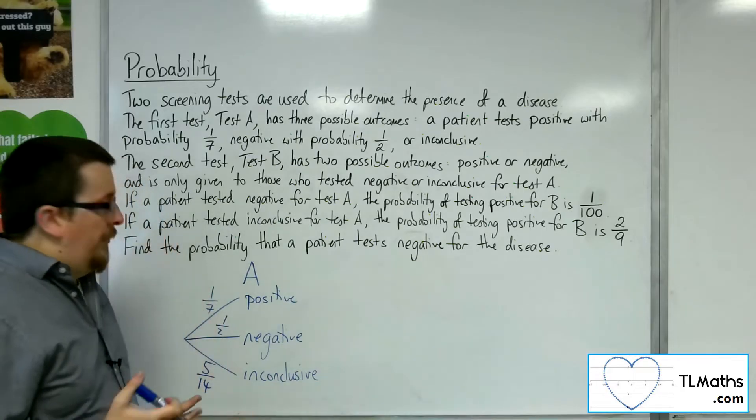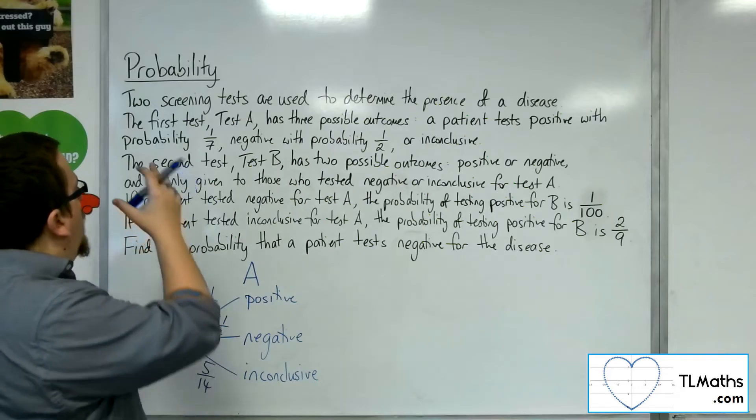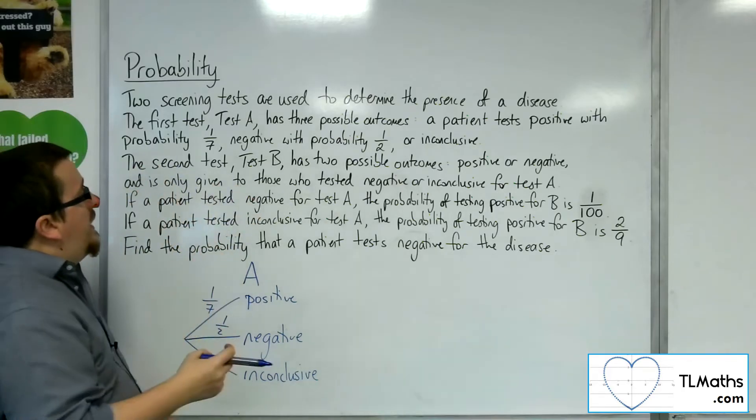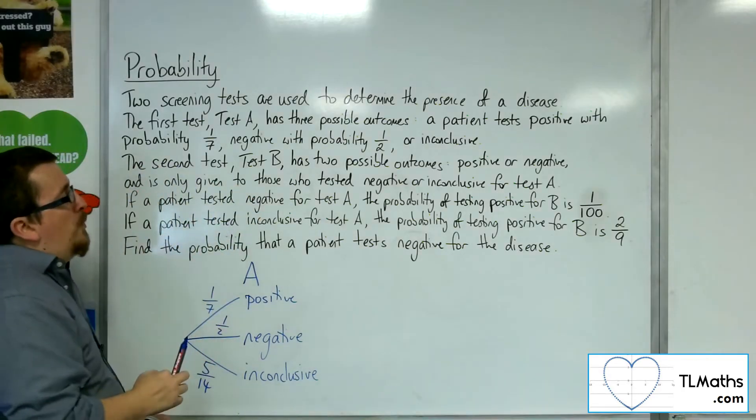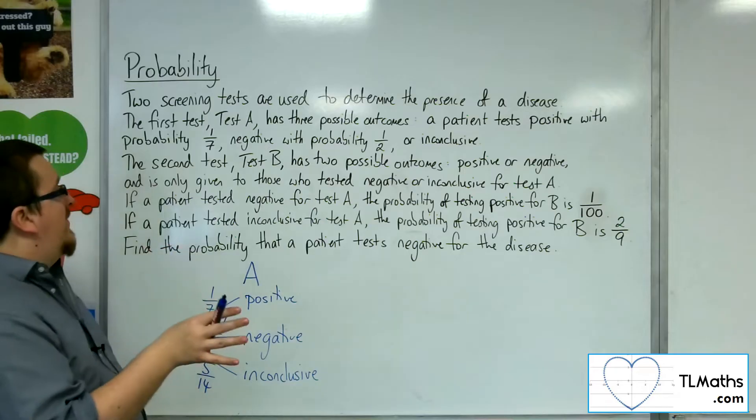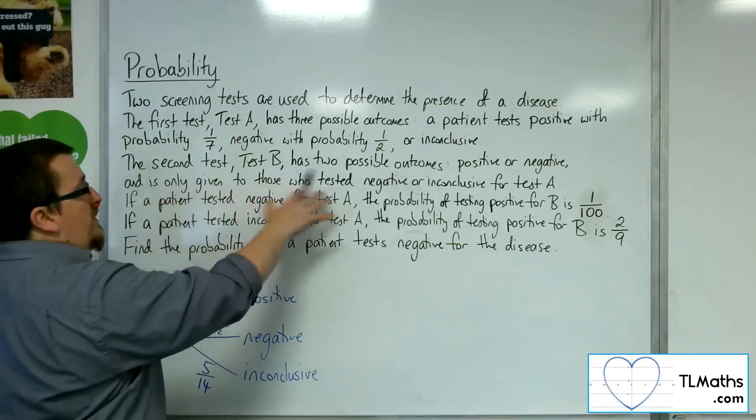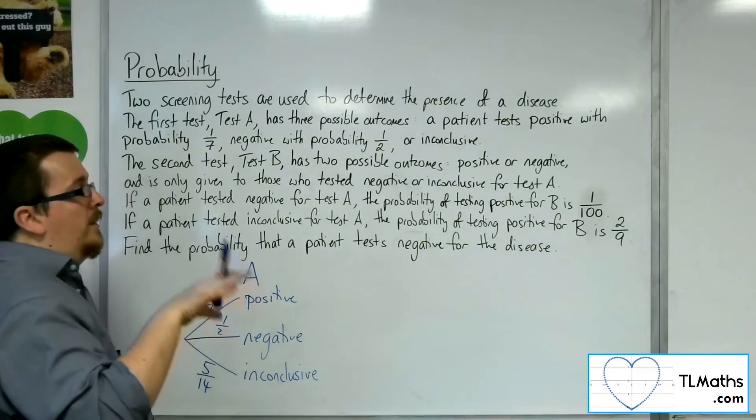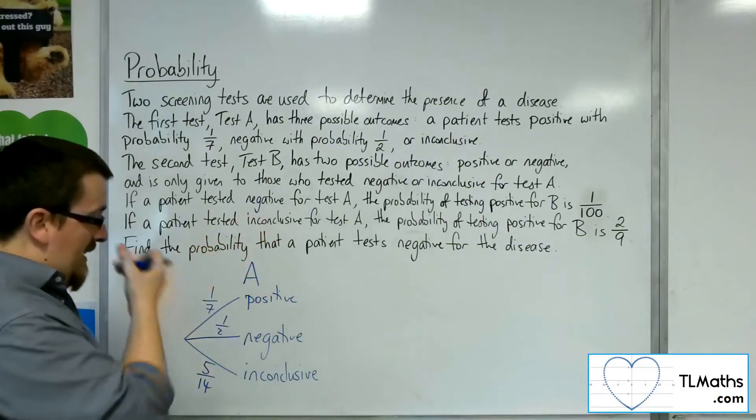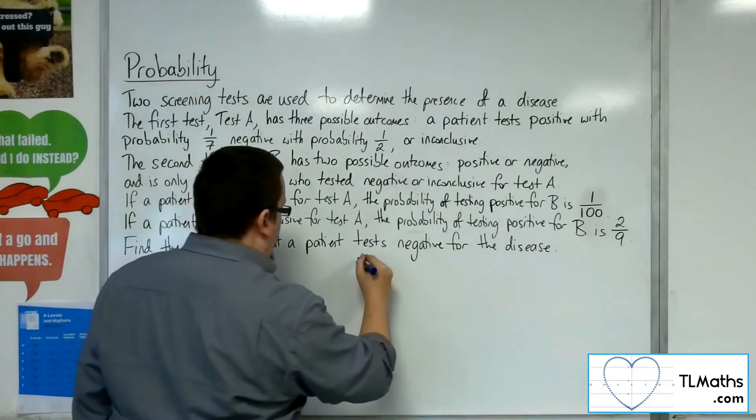Okay, so then we have a second test. Test B has only two possible outcomes, positive or negative, and is only given to those who tested negative or inconclusive for test A.